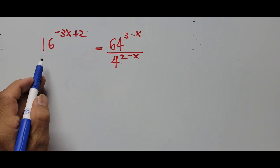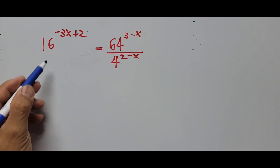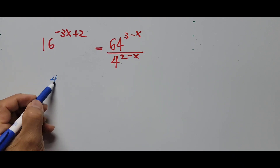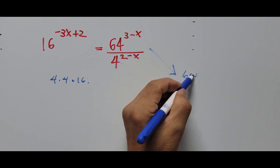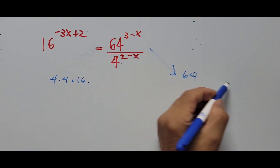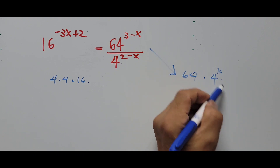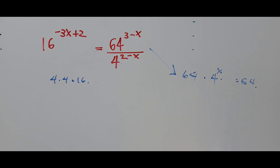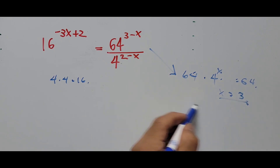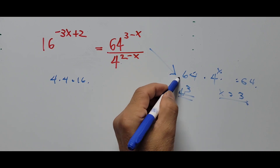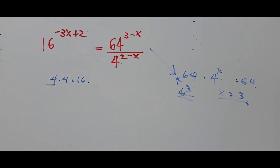For 16: the factors of 16 are 4 times 4, so 16 equals 4 squared. For 64: 4 times 4 is 16, times 4 is 64, so 64 equals 4 to the third power. All three terms share the common base 4, so we don't need the logarithm.